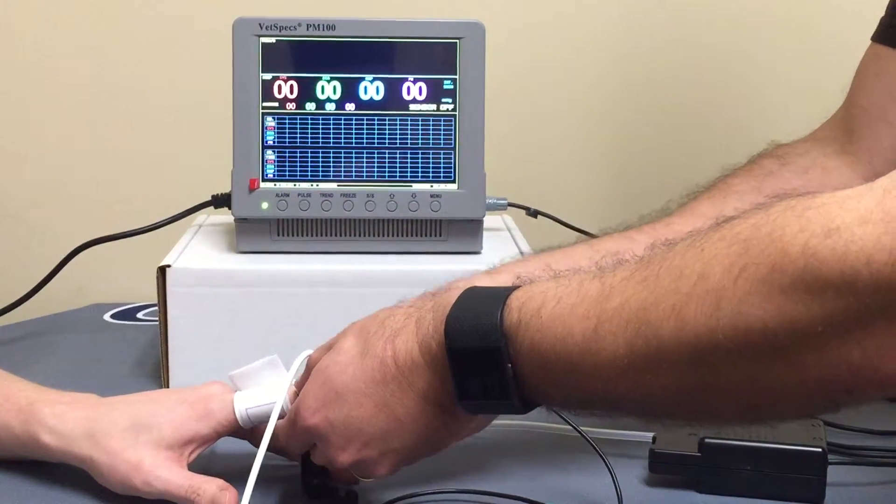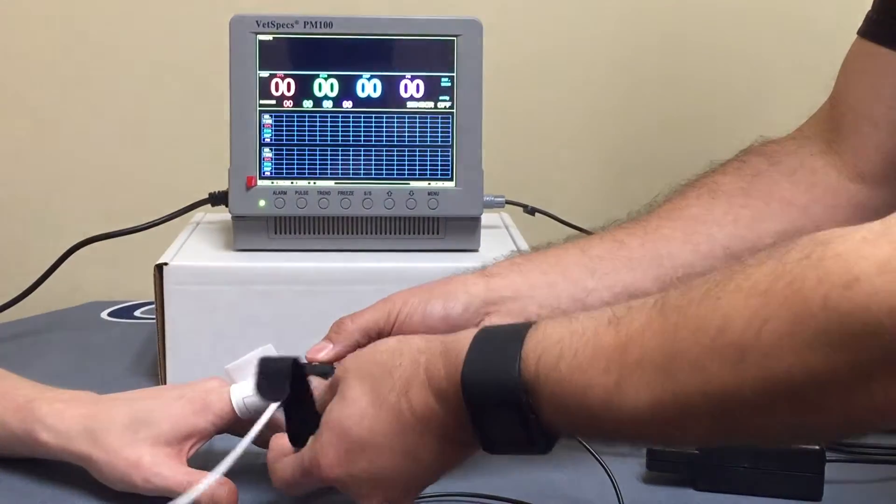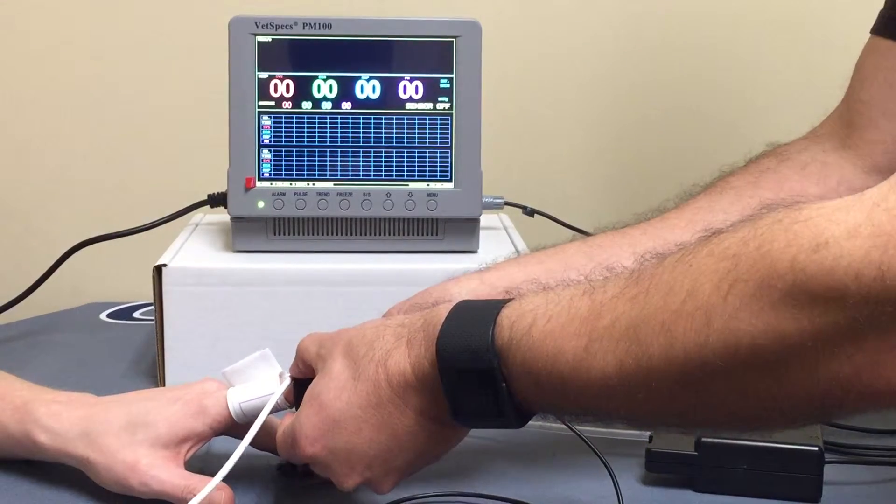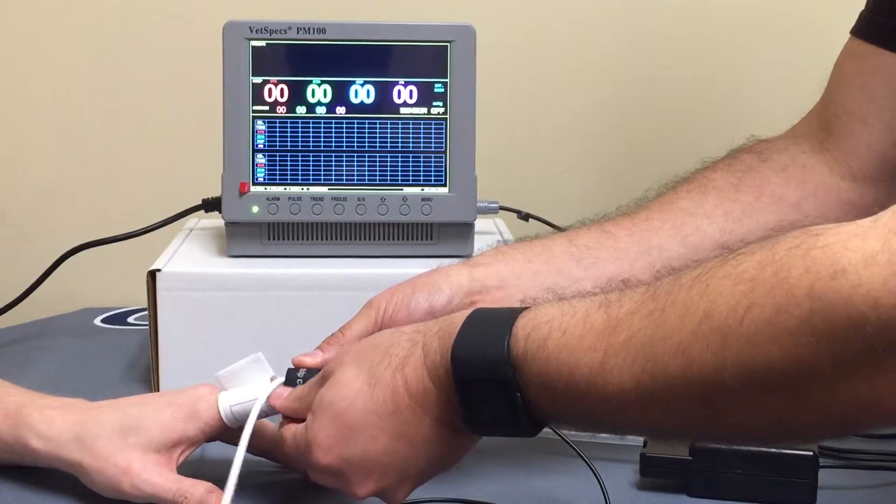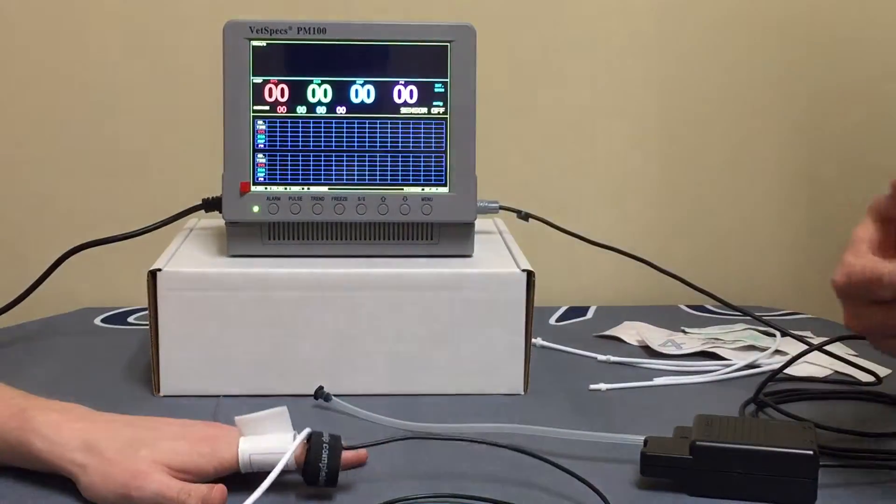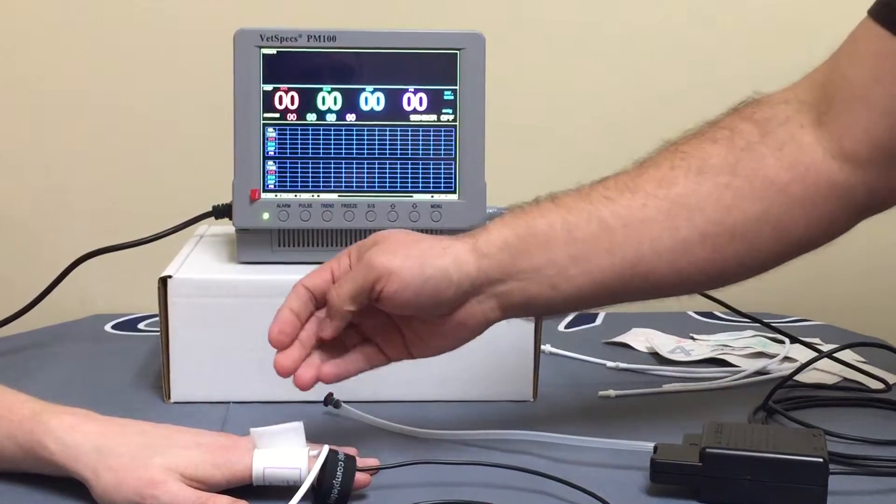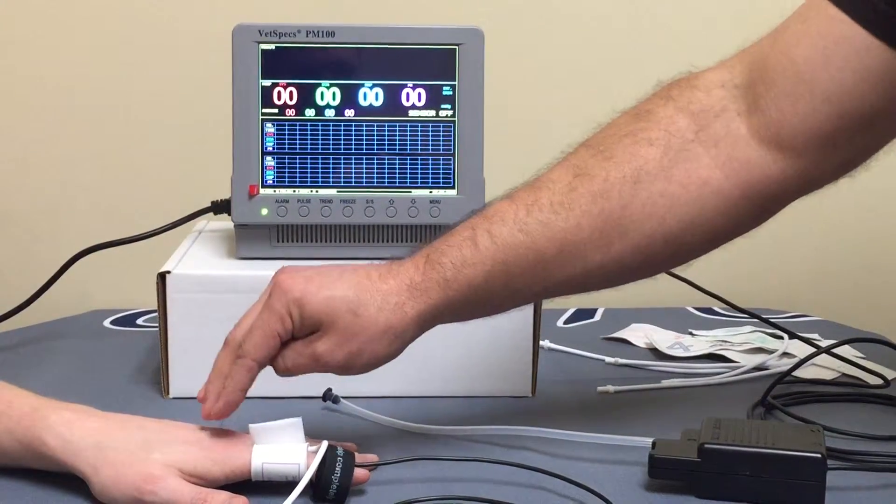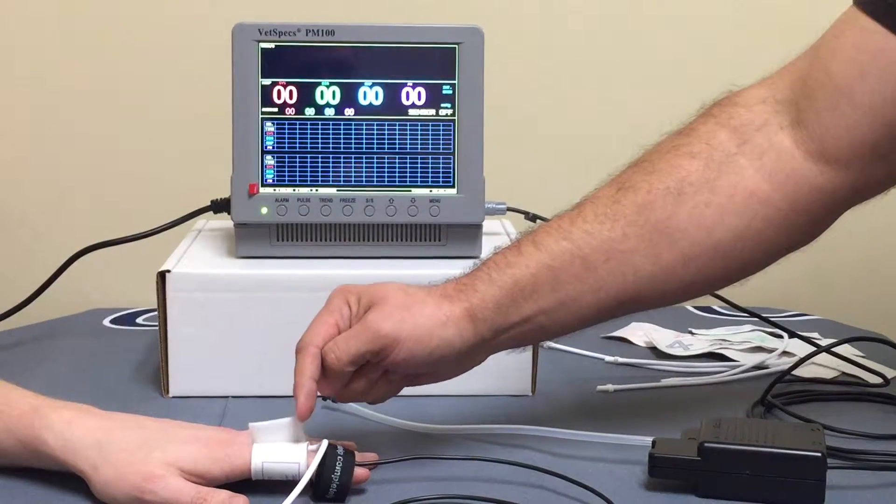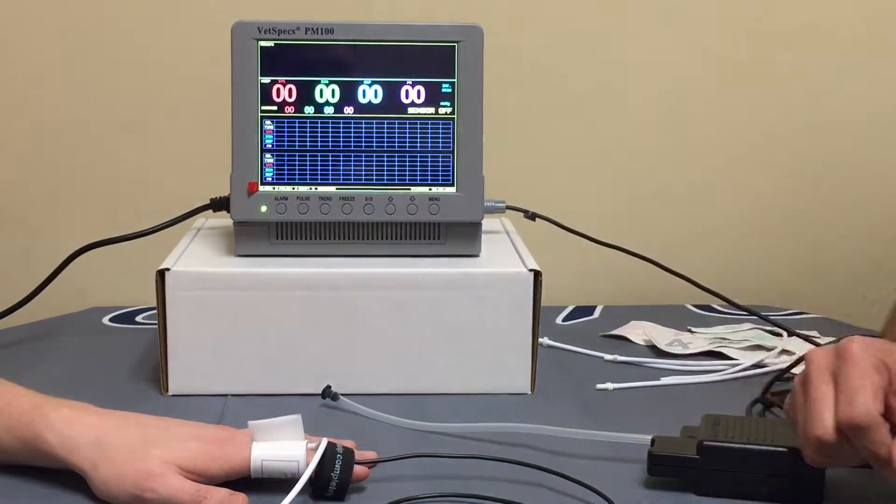So we want it snug, not tourniquet tight, but snug, so we get a good reading. Wrap that around nice and evenly. Make sure to wrap the entire velcro strap as well. That will keep that strap from dangling and causing any extra movement. So again, a patient that we're working on their tail, this would essentially be the cuff right at the base of the tail, proximal to the body. The sensor band would be no more than an inch distal to this cuff, so you don't want to have more than an inch gapping between the two.